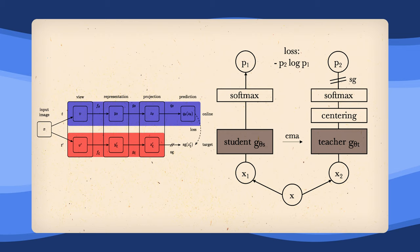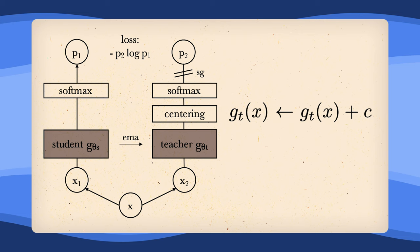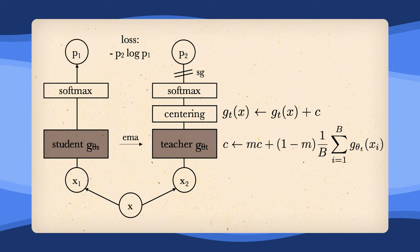Well, first of all, we have this centering right here, which can be seen as simply adding a bias c to the teacher predictions. This bias uses batch statistics to compute the mean of the batch, and is updated similarly to the exponential moving average.